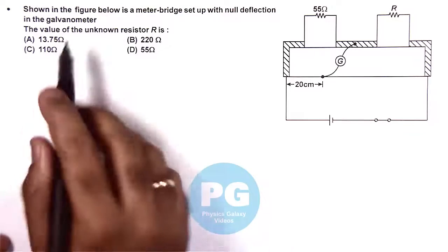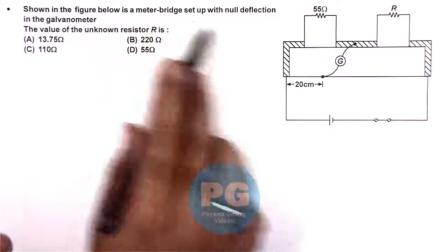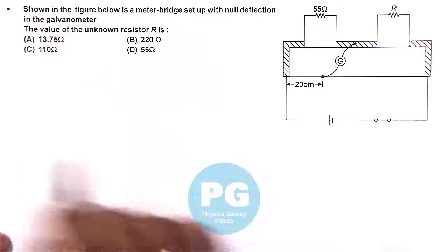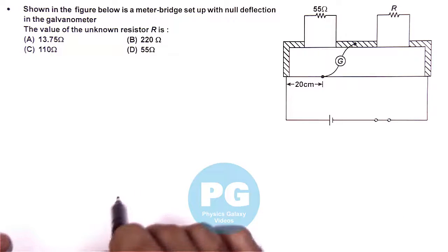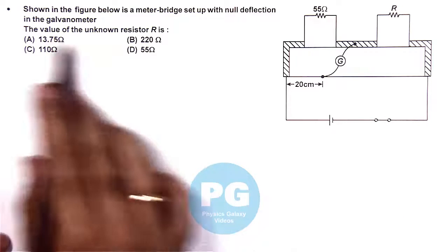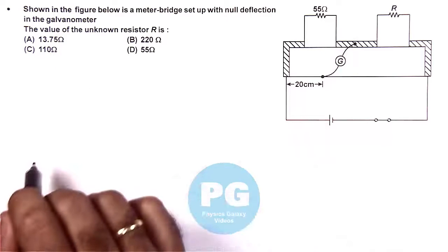In this question, shown in the figure below is a meter bridge setup with null deflection in the galvanometer. The balancing length here is 20 centimeters, and it is asking for the value of the unknown resistance.